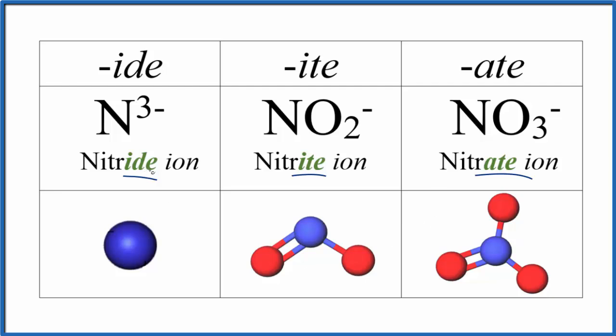When we look at the nitride ion, that's going to be from nitrogen on the periodic table. So we have our N3-. For the nitrite and the nitrate, that's a little more difficult.